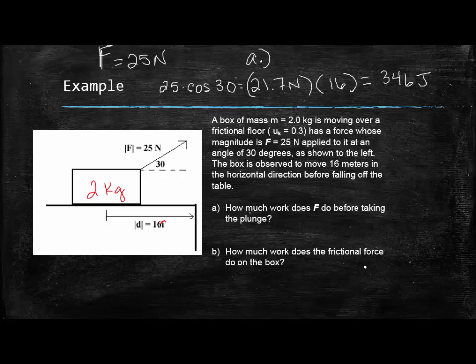Part B says how much work does the frictional force do on the box? So we have a coefficient of friction of 0.3. And this coefficient is equal to the force of friction over my normal force. In this case my normal force is going to be 20. So that makes my force of friction be 6. So remember that the force of friction is going to oppose the motion of the box. So we expect it to do negative work on the box. So 6 times 16 being the distance that the box travels, we get negative 96 joules of work by the frictional force.